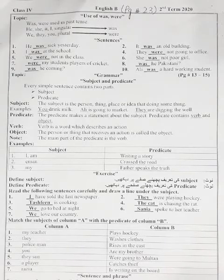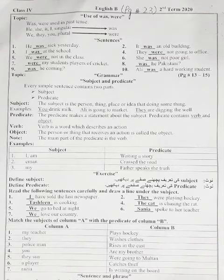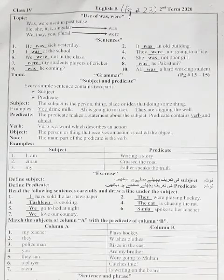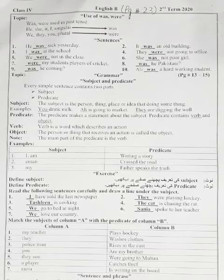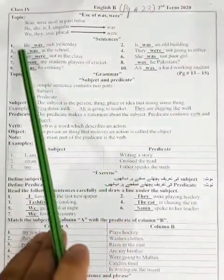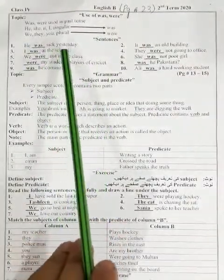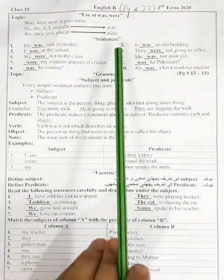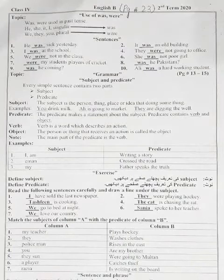She, he, it — singular ہیں۔ ان کے ساتھ 'was' use ہوگا۔ He, she, it یا singular person کے ساتھ ہم 'was' use کرتے ہیں۔ We, they, you — plural کے ساتھ ہم 'were' use کرتے ہیں۔